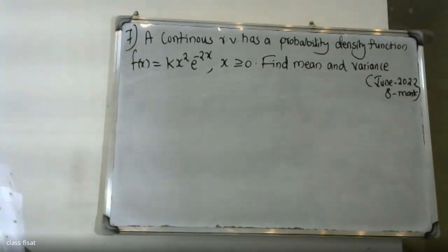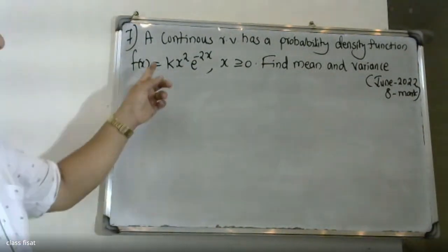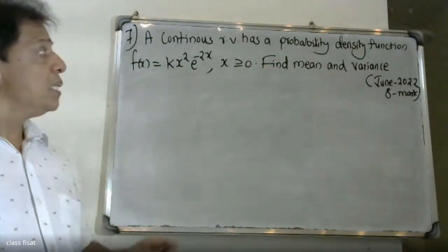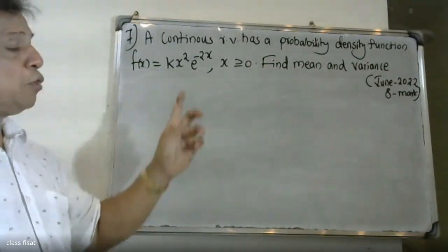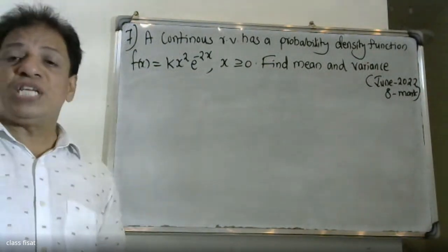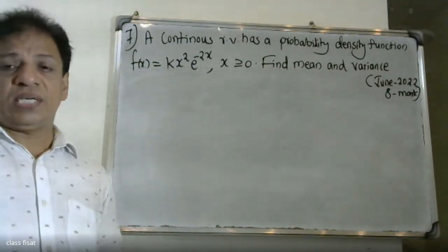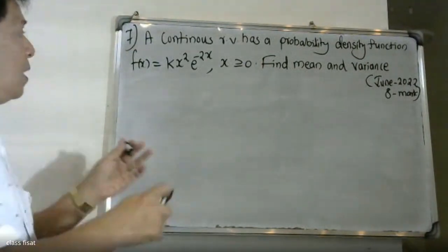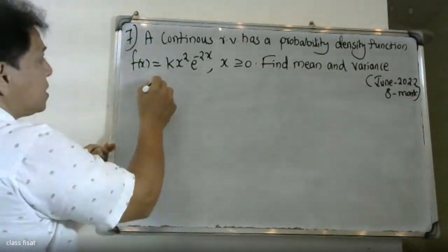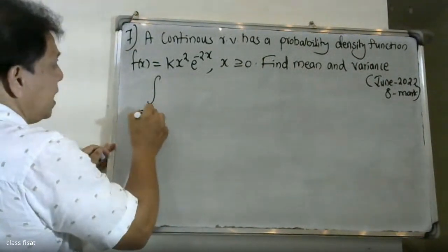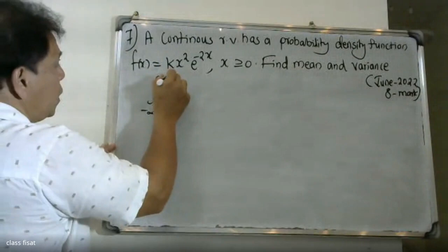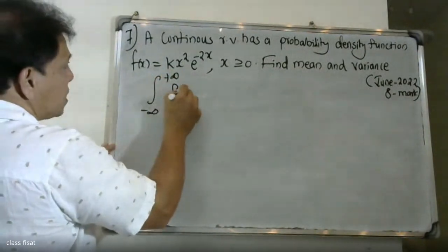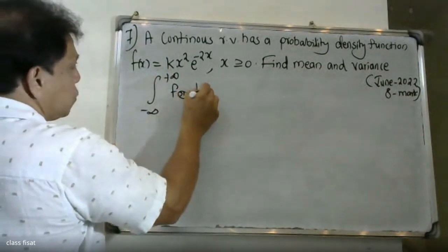The probability density function should satisfy the condition: the integral from minus infinity to plus infinity of f(x) dx is equal to 1.